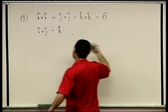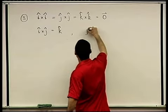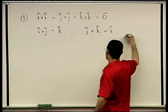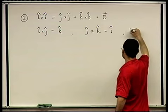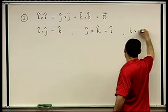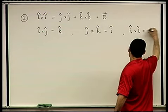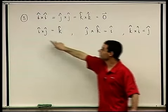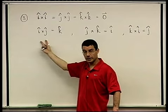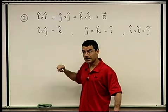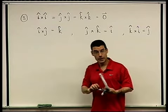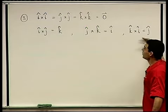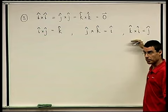So i cross j is k. Likewise, j cross k gives i, and k cross i gives j. What if you do j cross i? You're going to get minus k. And this is true in general: swapping the order reverses the sign.